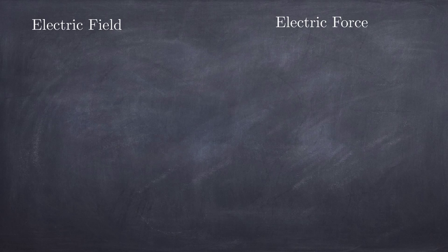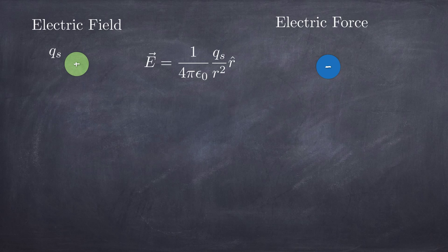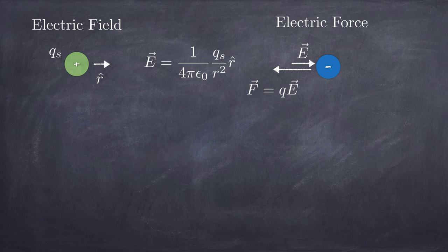I want to talk about something you already know about — the notion of an electric field. You have a charge of some kind, Q sub s, the source charge. It's going to produce a force acting on some other charge, the target charge. To compute that, we first calculate the electric field produced by the source charge using the Coulomb's Law formula from a point charge, involving r hat, a unit vector pointing from the source to the target charge. Then to get the force on the target charge, you multiply the target charge by the electric field.